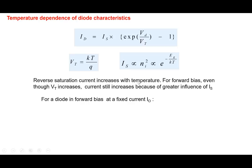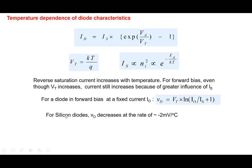If we bias a diode at a fixed current, the diode voltage Vd equals Vt · ln(I₀/Is + 1). A common mistake is to think that increasing temperature increases Vt and therefore increases diode voltage. But Is is the dominant term — as temperature increases, Is increases significantly, causing the diode voltage to actually decrease. For silicon diodes, an empirical rule of thumb is that the diode voltage decreases at the rate of about −2 millivolts per degree Celsius.